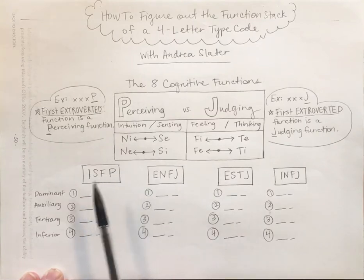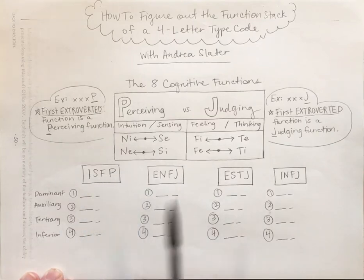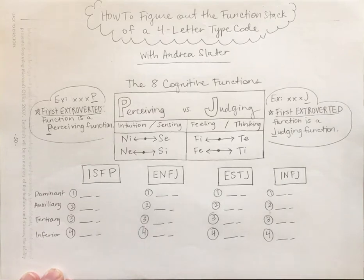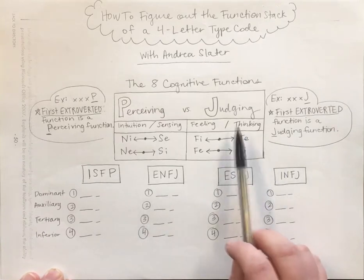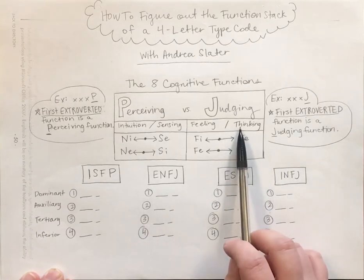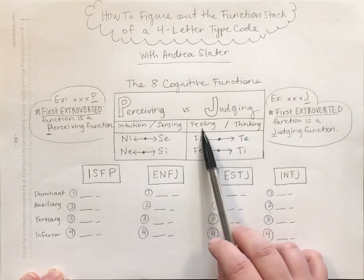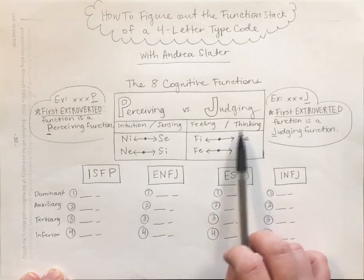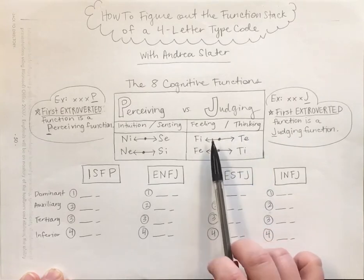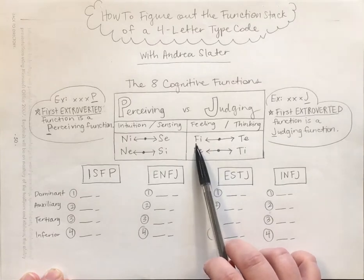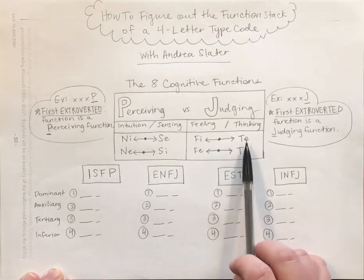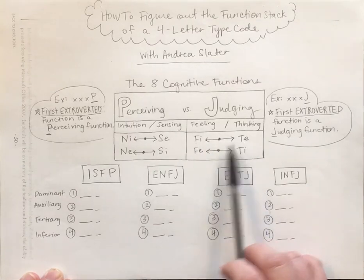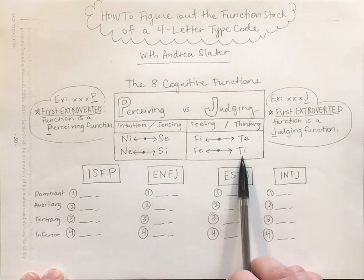Perceiving functions are used to collect data and take information in. When we go over the judging functions, we have feeling and thinking, and they will also be either introverted or extroverted — so introverted feeling, extroverted thinking, extroverted feeling, and introverted thinking.